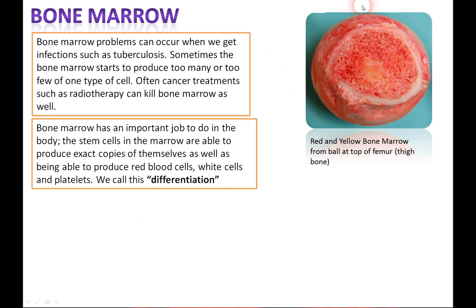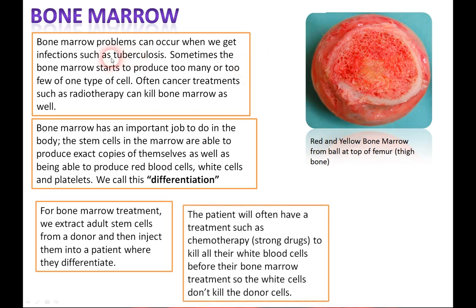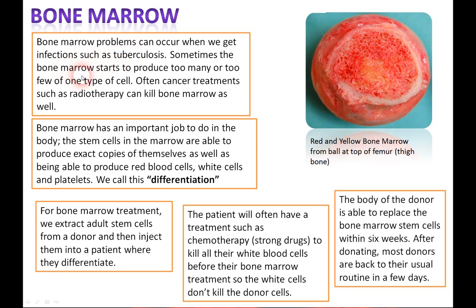Bone marrow: here we've got the top of a femur and you can see the bone marrow — the yellowy bit. Infections such as tuberculosis can cause bone marrow to produce too many or too few of one type of cell. Cancer treatments such as radiotherapy also kill bone marrow. Bone marrow stem cells can produce exact copies of themselves as well as red blood cells, white cells, and platelets — that's differentiation. For bone marrow treatment, adult stem cells are extracted from a donor and injected into a patient where they differentiate. The patient often has chemotherapy or strong drugs first to kill existing cells so white cells don't kill the new donor cells. The donor's body replaces bone marrow cells within six weeks, and most donors are back to their usual routine in a few days.